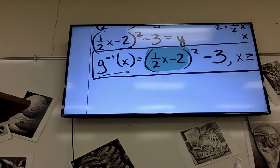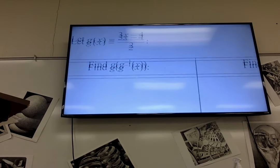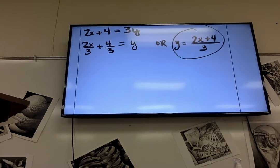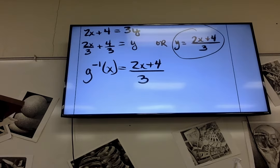because my answer's got to look like this. Oh, so just change the y to the inverse of 2. Yeah. G inverse of x equals 2x plus 4 over 3. Good.